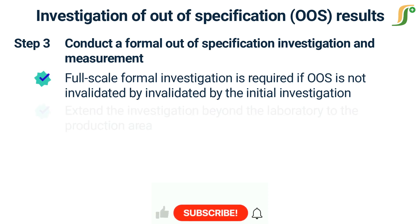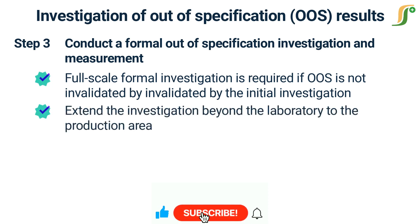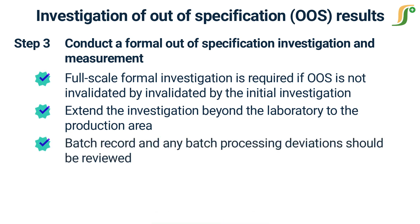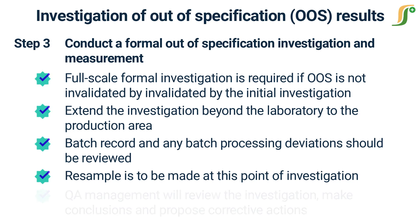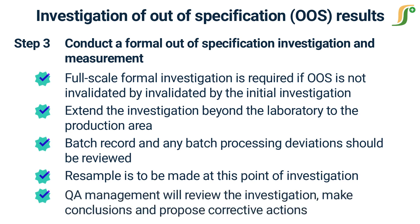At this time, you should extend the investigation beyond the laboratory to the production area. The batch record and any batch processing deviations should be reviewed in an attempt to formally identify the source of the out-of-specification. If you do not have sufficient original sample on hand, a decision to resample is to be made at this point. The formal investigation is conducted to identify process or non-process related errors. Ultimately, QA management will review the investigation, make conclusions, and propose corrective actions.